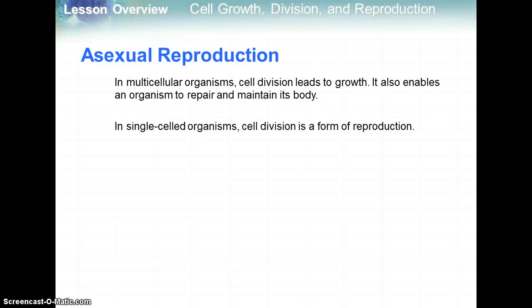In multicellular organisms, asexual cell division leads to growth and enables an organism to repair and maintain its body. For example, skin cells — you're constantly needing to create more skin cells because they wear off more quickly than cells in other parts of your body, so skin cells go through asexual reproduction quite frequently. In single-celled organisms, cell division is actually a form of reproduction.